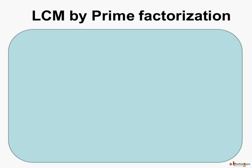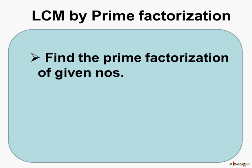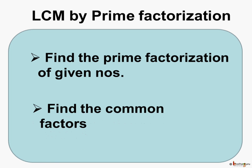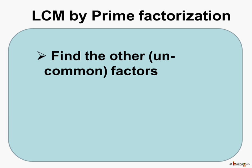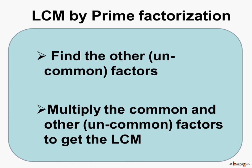First, let us revise how to find the LCM by prime factorization method. For this, find the prime factorization of the given numbers. Then find the common factors. Next, find the uncommon factors of the given numbers. And lastly, multiply the common factors and the uncommon factors and you will get the LCM.